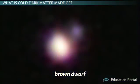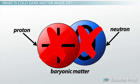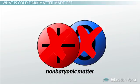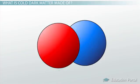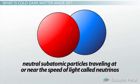However, other matter like that of cold and hot dark matter might be made of subatomic particles that aren't ordinary matter. That is to say, non-baryonic matter, meaning it's matter that's not made of protons and neutrons. Hot dark matter may include neutral subatomic particles traveling at or near the speed of light called neutrinos.